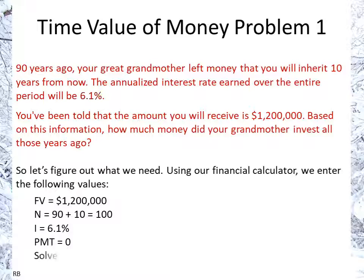So now we just solve for present value, and the present value comes out to $3,218.42. Note that the calculator would give you a negative number there. That is the amount of money that your grandmother left 90 years ago.